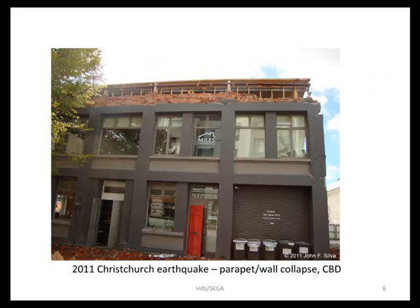I think a lot of it had to do with the type of wall construction they were using in Christchurch at the turn of the century when these buildings were put up. It's a cavity wall construction with an outside wythe, an air gap, and then an inside wythe of brick. Anchors didn't have much to hang on to.